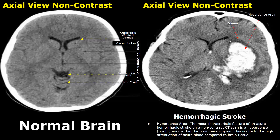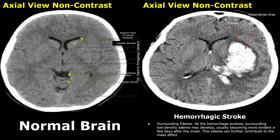The image on the right shows a hemorrhagic stroke. A large hyperdense bright structure is seen within the brain. It is hyperdense because these areas are filled with clotted blood — clotted blood has high density so it appears brighter. This hyperdense area is usually surrounded by low density fluid; this is edema.